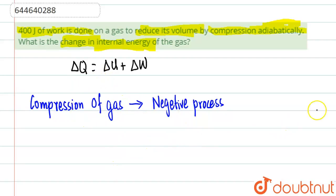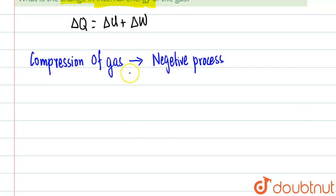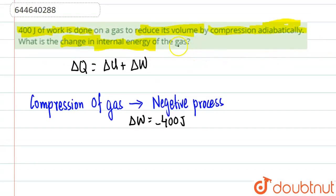So what we are going to do is ΔW will be equal to minus 400 joules. We are going to use this minus because it is compression of gas, so there is a reduction in volume.